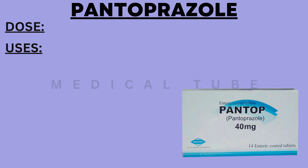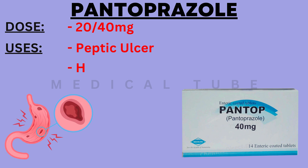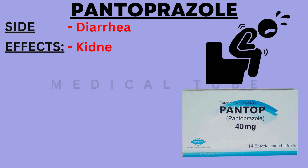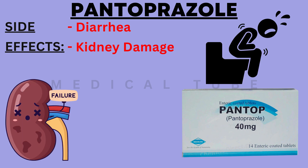The next drug is Pantoprazole. The dose is 20 mg or 40 mg. It is used in peptic ulcer and heartburn. The side effects of Pantoprazole are diarrhea, kidney damage and bone fractures.